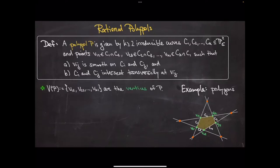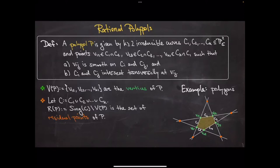There are the vertices shown as green points in the picture, and then orange points which are the outside intersection points of the boundary curves. Considering all pairwise intersections of the boundary curves, some of those are vertices but not all. Also the boundary curves might have singularities, and these singularities are also part of the orange points, which I call residual points.